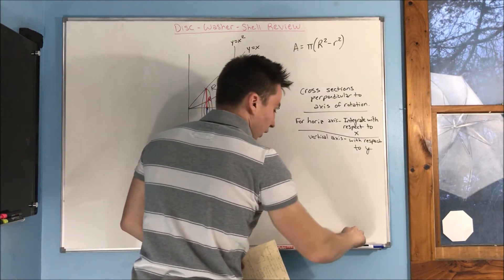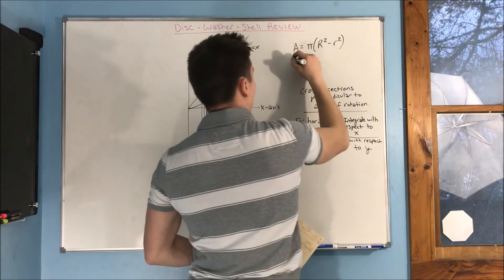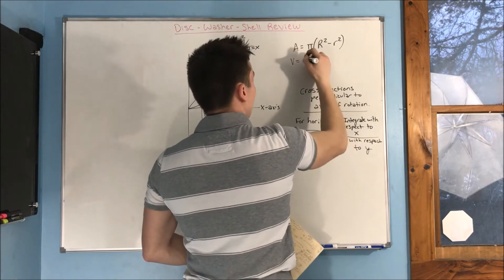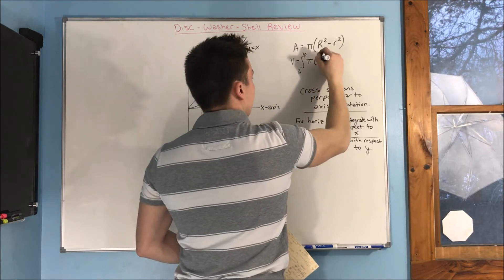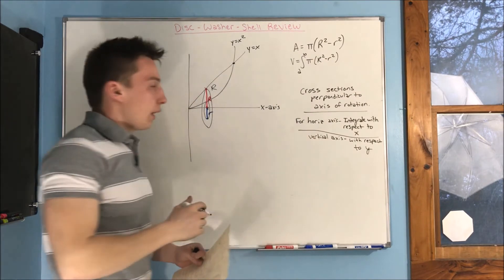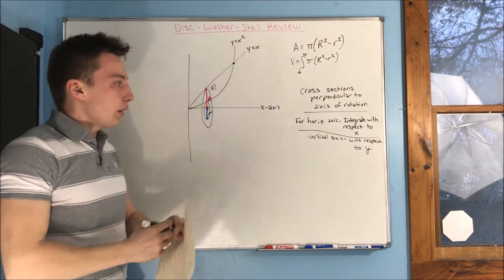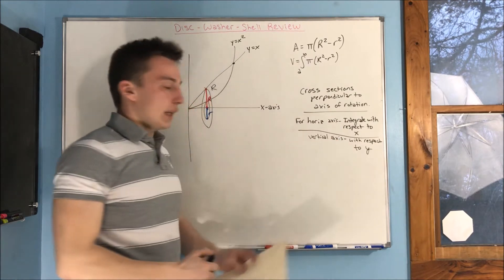And you're going to integrate this the same. So you're just going to have the volume equal the integral from A to B of pi R squared minus r squared, and whatever, it's dy or dx, depending on whether you're revolving around a horizontal axis or a vertical axis.